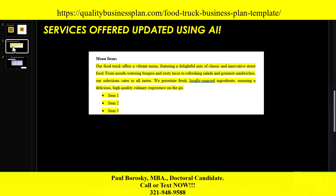The second change I made is that I added an introductory paragraph for the menu items. Typically my templates just list menu item one, item two, item three as a structure for you to fill in. Instead, I went to ChatGPT and asked for an introductory statement for the menu items. I did update it and added my own tweaks, but it gives you a great starting point to write an introductory statement for your menu items section.